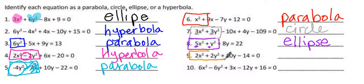Number 9, we are adding them together, and they are the same. Therefore, this is going to be a circle.